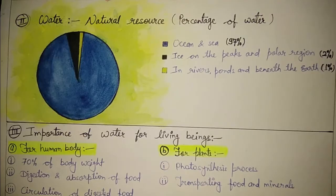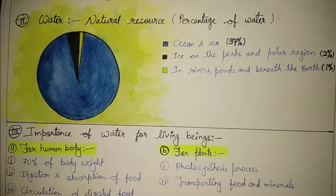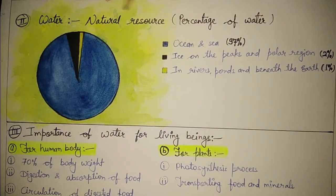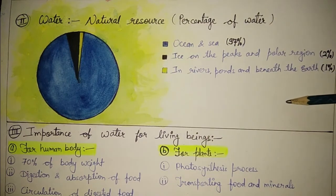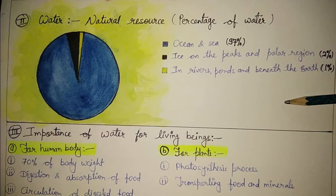Now, the second point: water as a natural resource. We know that we have a very large quantity of water on the Earth, but all of it is not usable for us because some is found in oceans, some in polar regions, and some in rivers, ponds, and under the land.